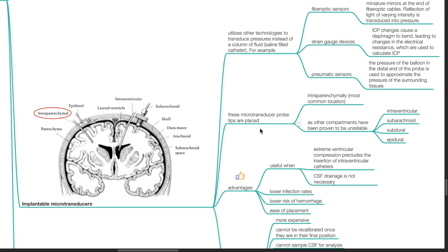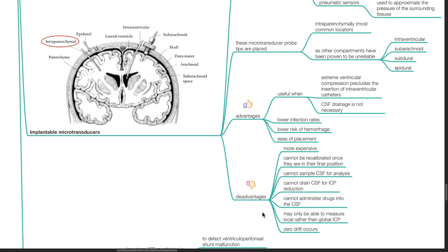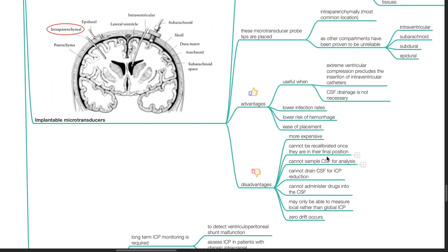These microtransducer probe tips are placed intraparenchymally, which is the most common location. Other compartments such as intraventricular, subarachnoid, subdural, and epidural locations have been proven to be unreliable. Advantages of implantable microtransducers: it is useful when extreme ventricular compression precludes the insertion of intraventricular catheters and where CSF drainage is not necessary. There are lower infection rates, lower risk of hemorrhage, and it is easier to place compared to EVD. Disadvantages: It is more expensive, it cannot be recalibrated once in final position, it cannot sample CSF for analysis, cannot drain CSF for ICP reduction, cannot administer drugs into the CSF, it may only measure local rather than global ICP, and zero drift occurs with implantable microtransducers.